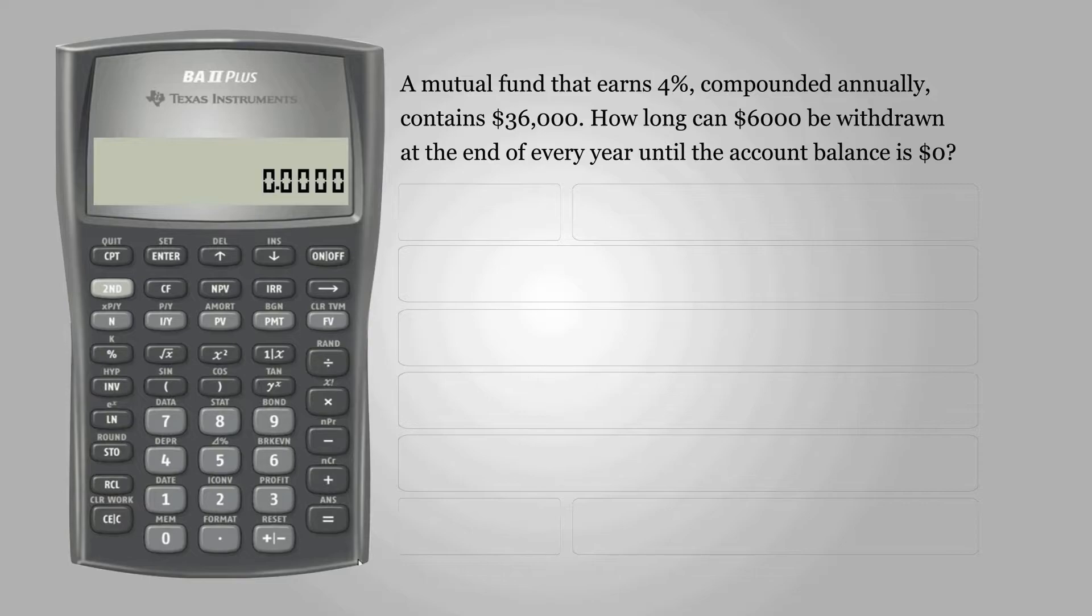First, we need to set all variables to defaults, so press 2nd and FB to clear TVM, or time value of money.